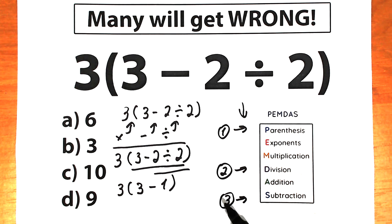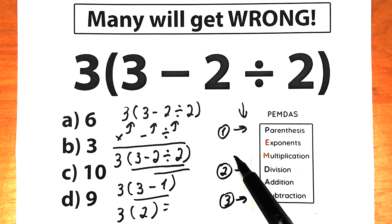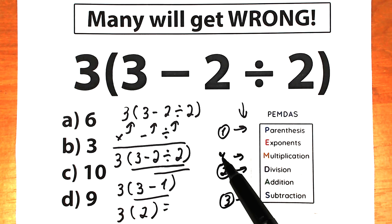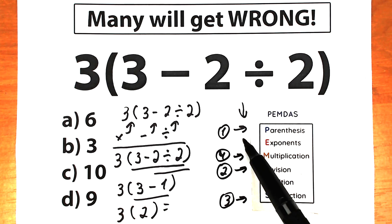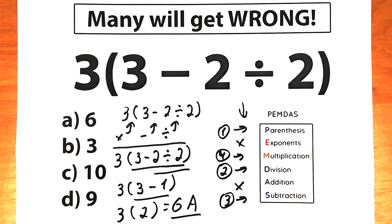Our third step is subtraction, because the subtraction sign is inside the parentheses. So we have 3 inside parentheses, giving us 3 minus 1 which equals 2. Our last step is multiplication. We don't have any exponents or addition signs. So 3 times 2, which is equal to 6 — Option A. This is the correct answer to this challenge.